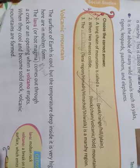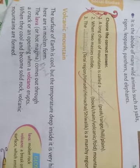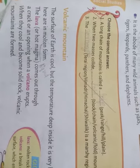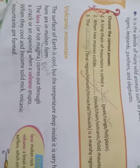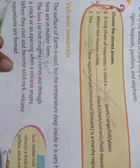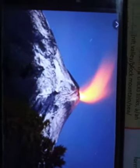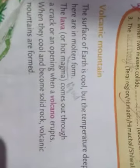The next landform is Volcanic Mountain. How is a Volcanic Mountain formed? The surface of the earth is cool but inside the earth is very hot. Inside the earth, rocks are in liquid form because of heat. This is called Lava or Magma. This lava comes out through an opening. After coming out, this lava becomes cool like a rock and Volcanic Mountains are formed. Examples: Mount Fuji in Japan and Mount Vesuvius in Italy.